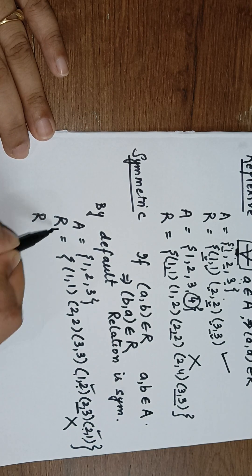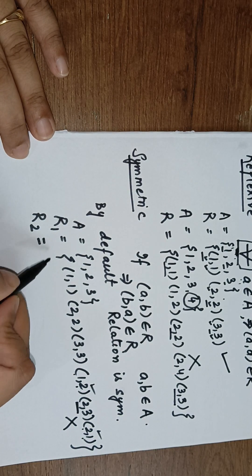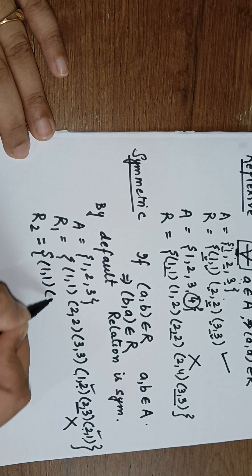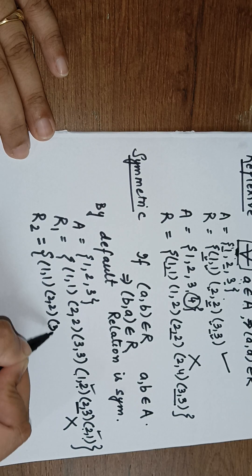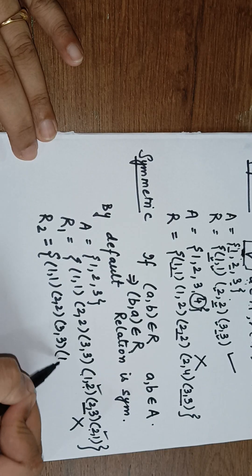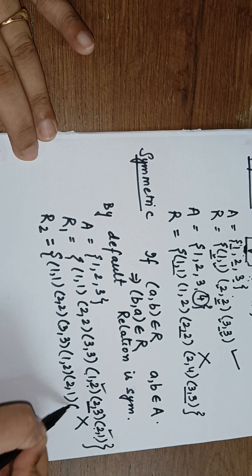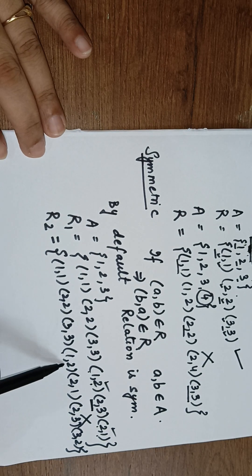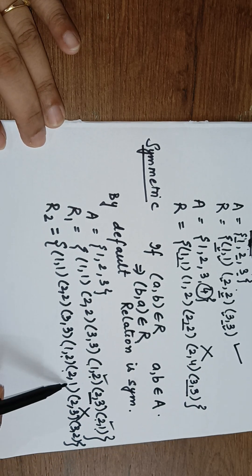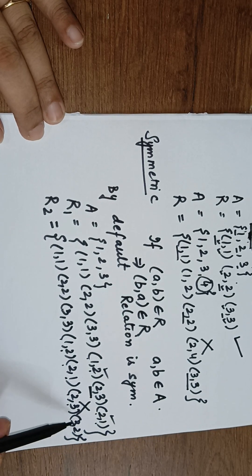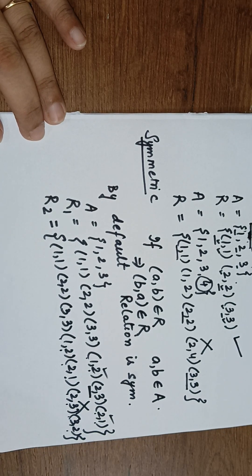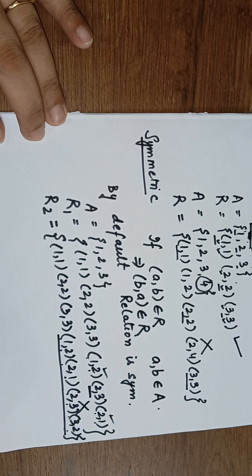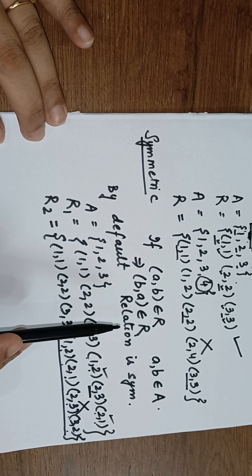Now suppose we have another relation on the same set: {(1,1), (2,2), (3,3), (1,2), (2,1), (2,3), (3,2)}. We can see that 1 is related to 2 and 2 is related to 1; 2 is related to 3 and 3 is related to 2. All elements have their opposite pairs present, so this is a symmetric relation.